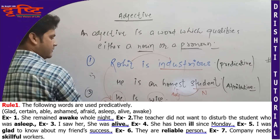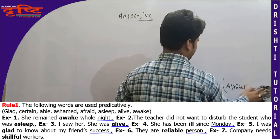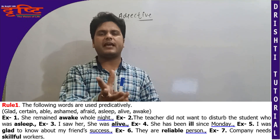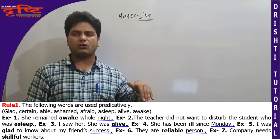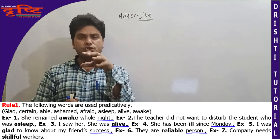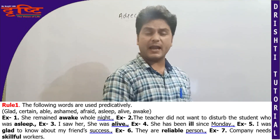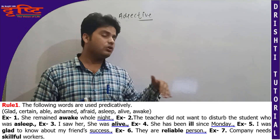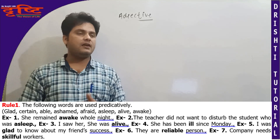Rule Number One: Kuch aise words hain jinko attributively use kar sakte hain ya predicatively. Rule Number One mein likha hai ki the following words are used predicatively only. Kuch aise words hain jinhe sirf predicatively use kiya jaata hai: certain, glad, ascend, able, afraid, asleep, alive, awake. In shabdon ka prayog predicatively hota hai.